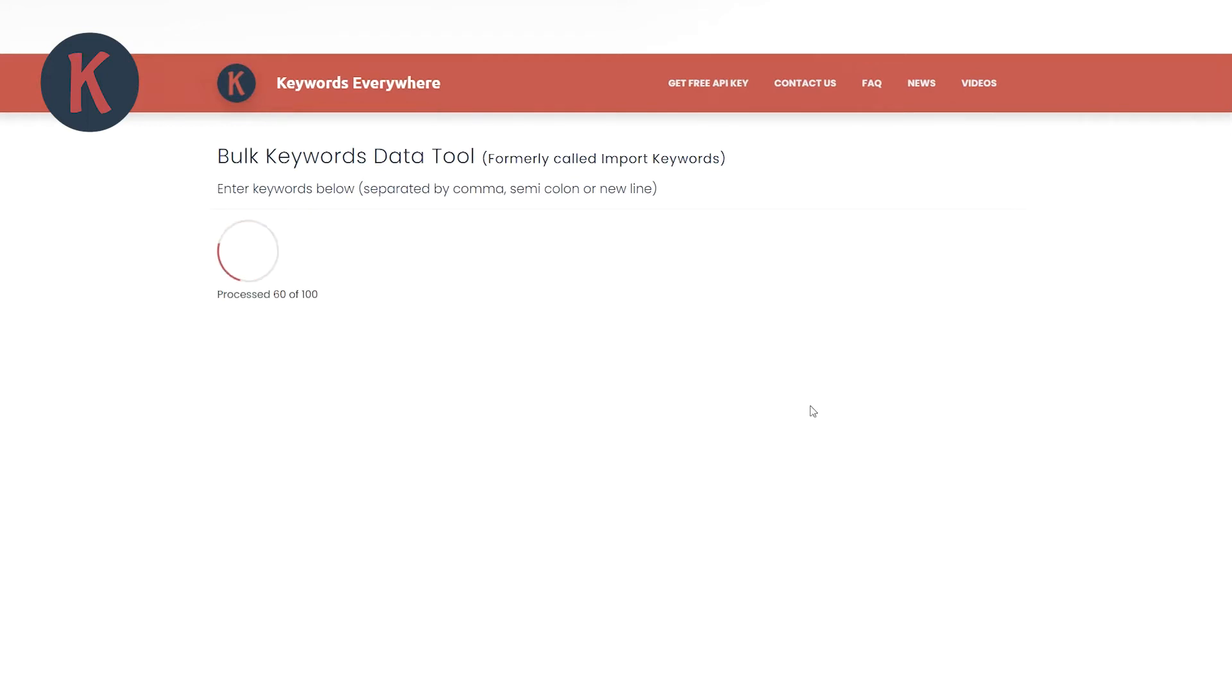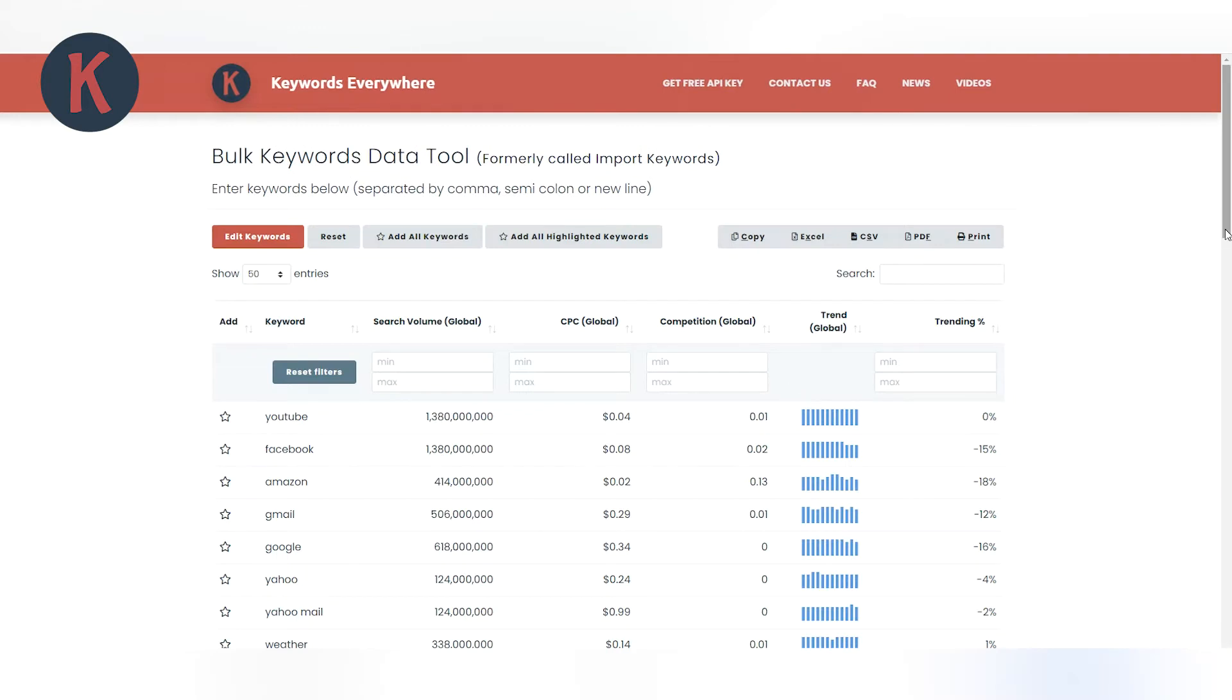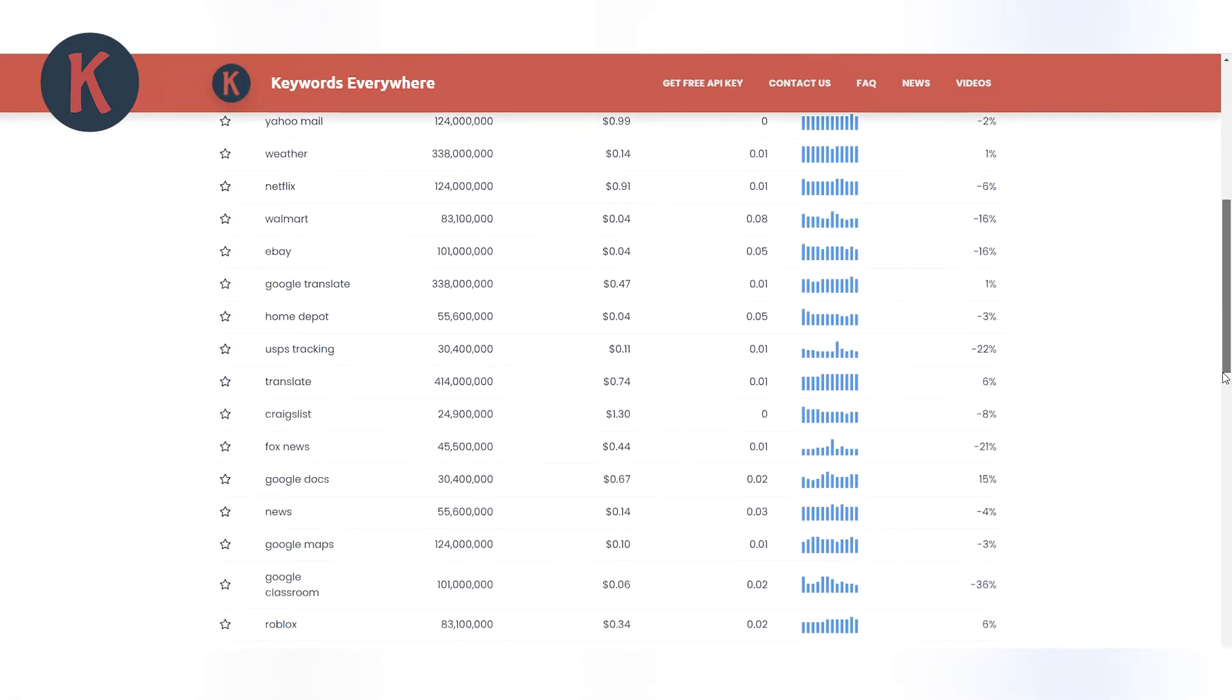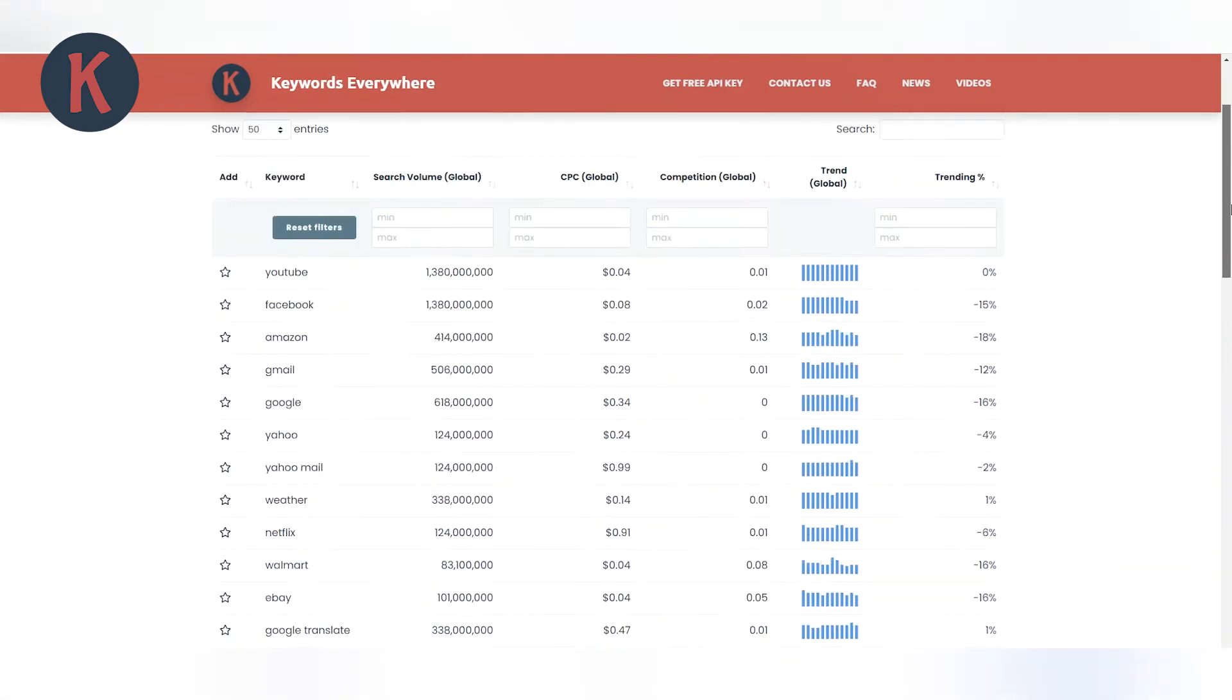It generally takes under a minute for the page to load with 10,000 keywords and their monthly search volume, CPC, competition, and the 12-month trend data. You can then export the data to a CSV or Excel file.